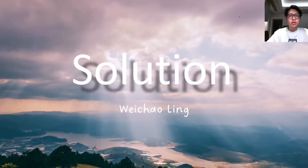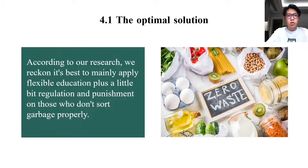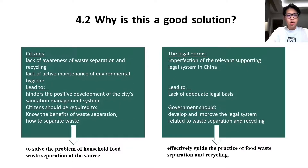Now for the solution. According to our research, we recommend applying flexible education plus a degree of regulation and punishment for those who don't sort garbage properly. The lack of public awareness about waste separation and recycling affects its implementation, as does the lack of active maintenance of environmental hygiene. Therefore, there is a need to promote citizen awareness — especially for common waste recycling and food waste — so citizens understand the benefits and how to separate waste at source. Meanwhile, the legal norms have shortcomings and the relevant legal system is imperfect, so it is necessary to improve the legal system to effectively guide practice.